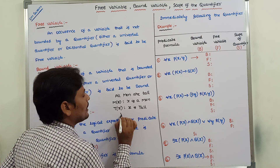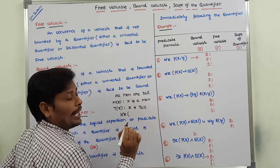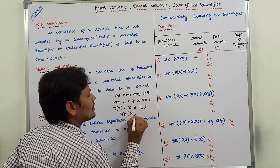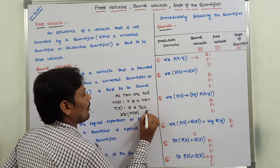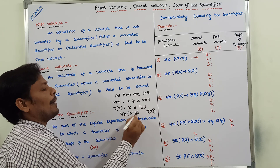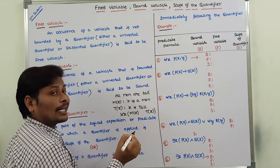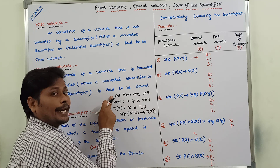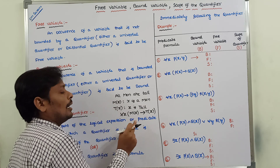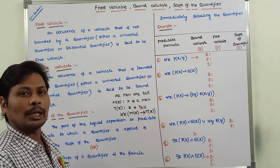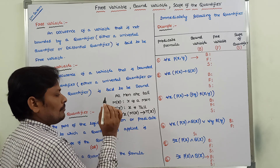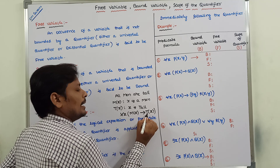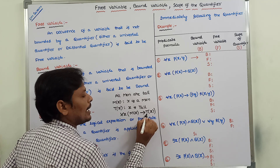Now we represent the statement 'all men are tall' using these two predicate functions. It can be written as: for all X, if X is a man then X is tall — that is, for all X, M(X) implies T(X). The connective used between them is the conditional connective. This is the symbolic form using the universal quantifier, where X is the subject and M and T are the predicates.